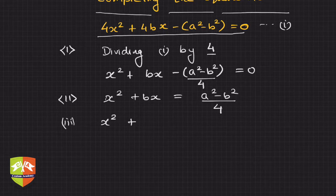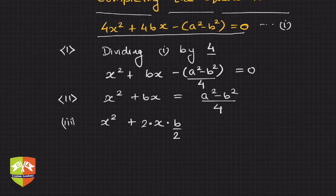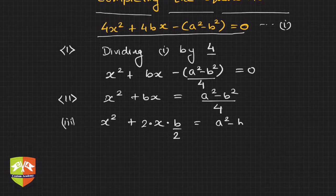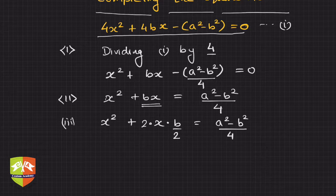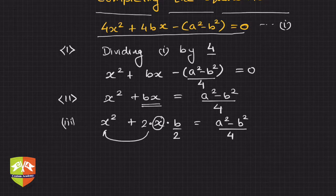Now we rewrite bx as 2·x·(b/2). This is a critical step for the completing the square method. I'm writing bx as 2 times x times b/2 — x is linked to the x² term, and b/2 gives us an indication of how to complete the square.